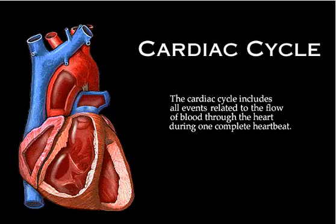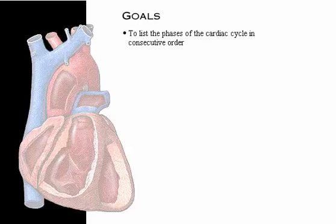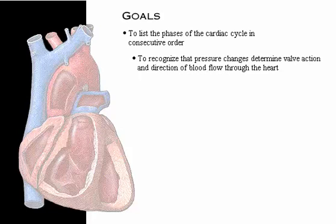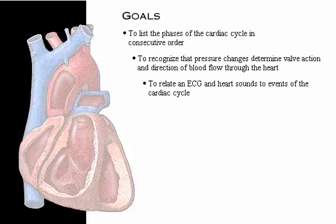The cardiac cycle includes all the events related to the flow of blood through the heart during one complete heartbeat. Your goals for learning are to list the phases of the cardiac cycle in consecutive order, to recognize that pressure changes determine valve action and the direction of blood flow through the heart, and to relate an ECG wave tracing and heart sounds to the events of the cardiac cycle.